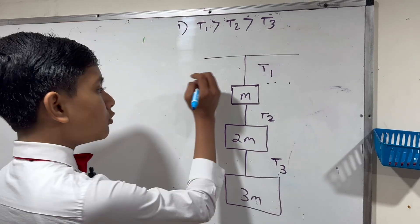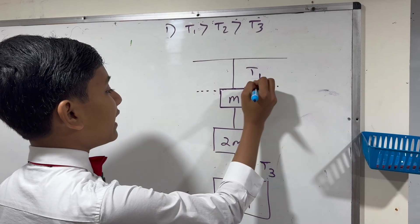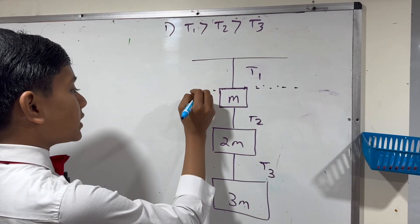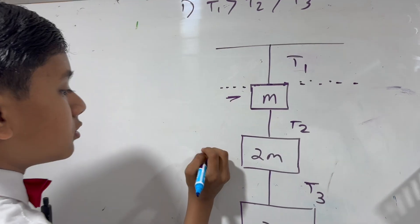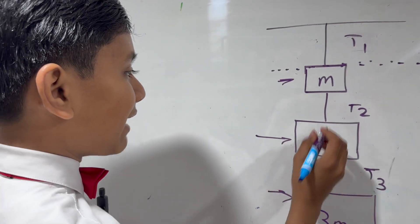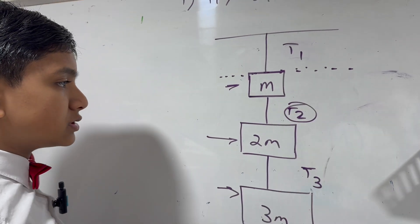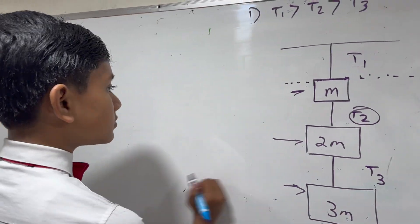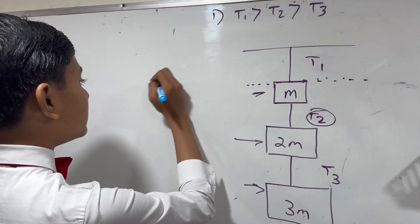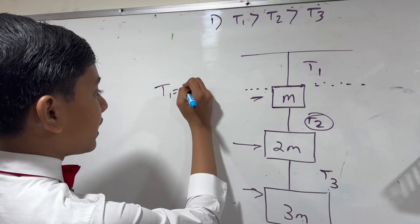So this rope has to carry everything from the top down, so that includes this mass, this mass, and this mass. It's not like it just pulls itself. We have T1 has to be pulling up mg, 2mg, and 3mg.